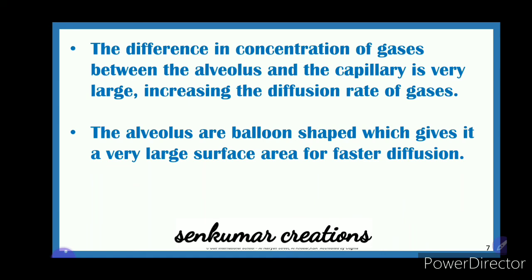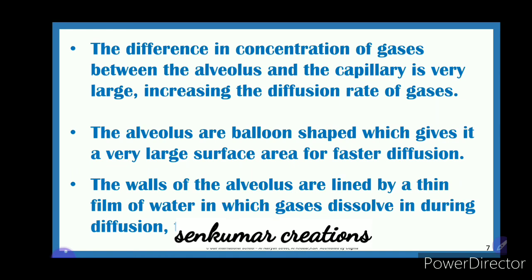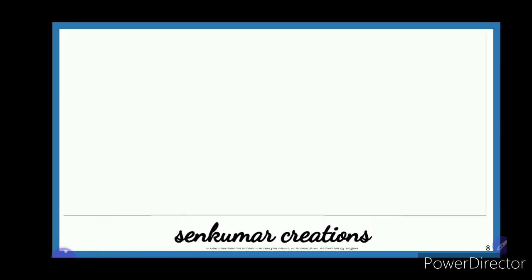The alveolus is balloon-shaped, giving a very large surface area for faster diffusion. Another adaptation is that the walls of the alveolus are lined by a thin film of water. Gases dissolve in this moisture during diffusion, which makes the process faster. These adaptations — thin walls, steep concentration gradient, large surface area, and a moist lining — all allow the alveolus to perform gaseous exchange efficiently.